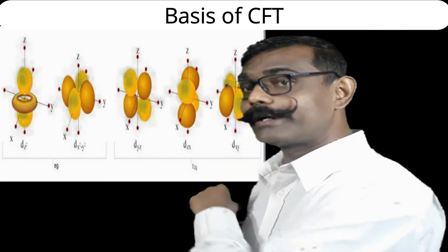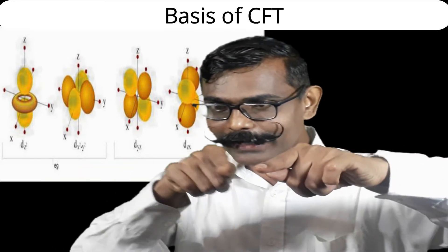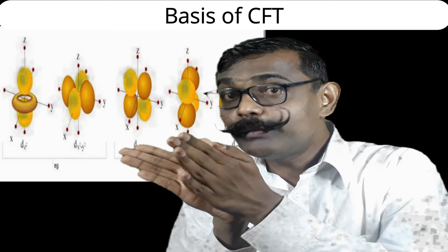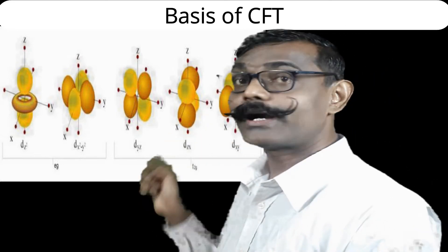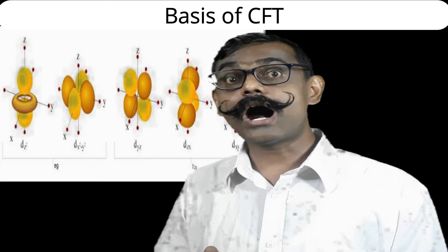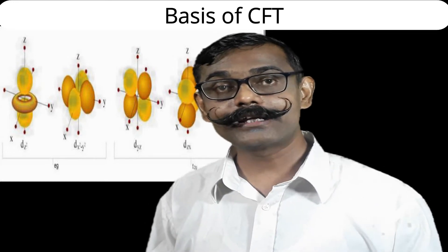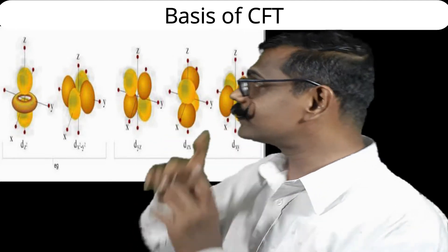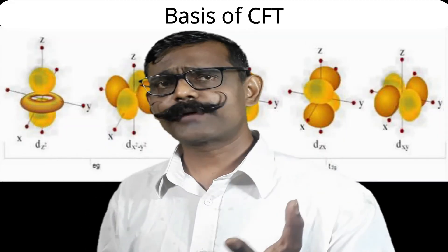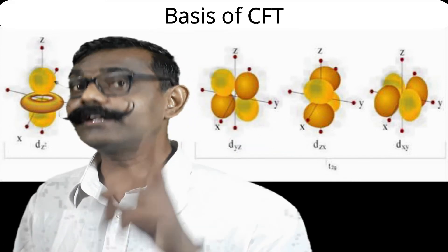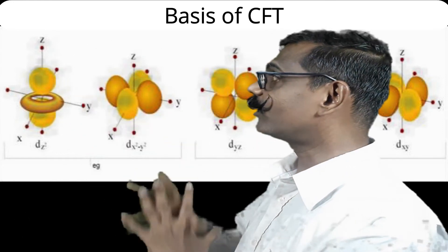Likewise, the last orbital dxy will be in the x-y plane. In between x and y there will be lobes making a 45-degree angle to either axis. Similarly, the other three lobes will be there. So the last three orbitals — dxy, dxz, dyz — are in between axes, while the first two — dx²-y² and dz² — are along axes. dz² has majority contribution along z-axis and partly along x and y; dx²-y² is completely along x and y.